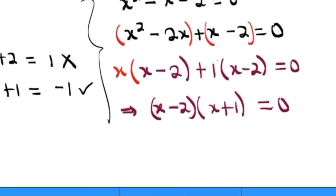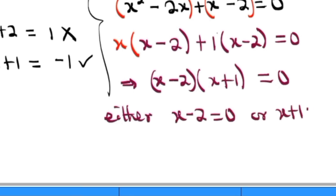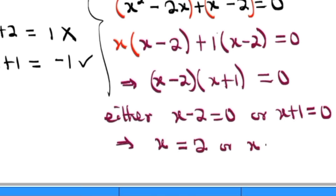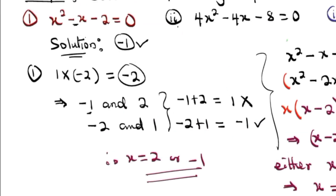We have a product of two real numbers equal to zero, which means either x - 2 = 0 or x + 1 = 0. So x - 2 = 0 implies x = 2, or x + 1 = 0 implies x = -1. Now let's look at Problem 2.